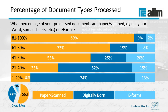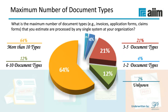There is still a significant number of respondents reporting they process more than 10 document types, suggesting more document-based processes are adopting document automation. As companies get more familiar with document automation, they look for ways to get rid of more paper and inject faster turnaround times or improved customer experience. The number with 6–10 document types was slightly lower than last year — down from 16% — while those reporting 3–5 document types increased to 21%. Overall, document automation shows a steady state of use and an increasing footprint within organizations.